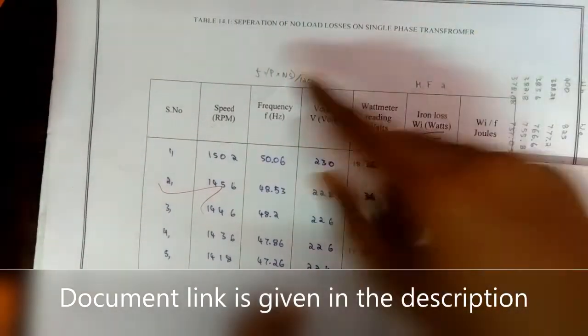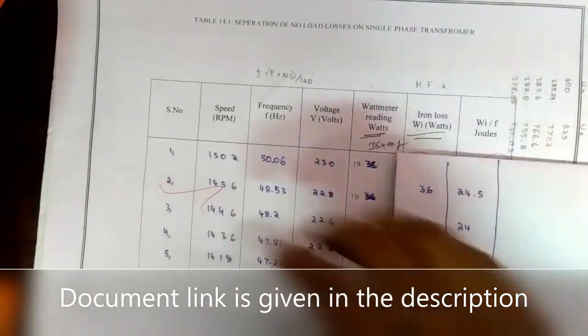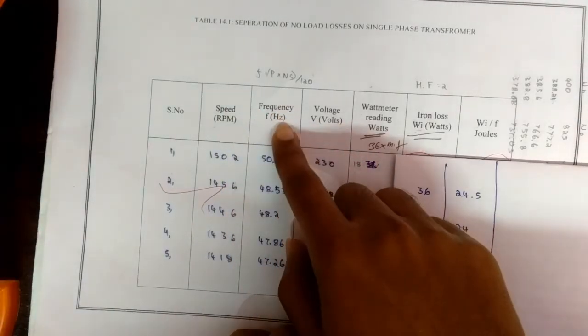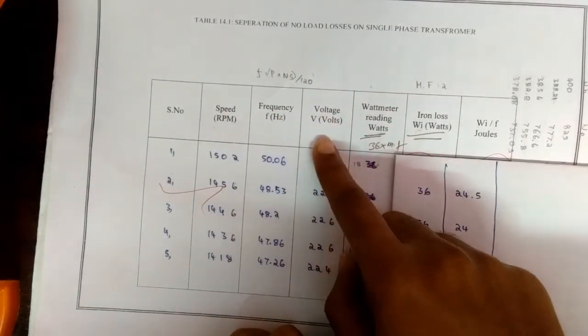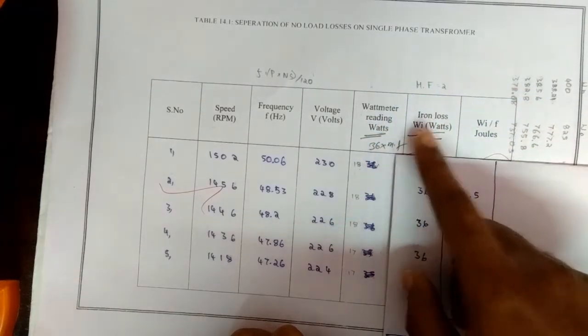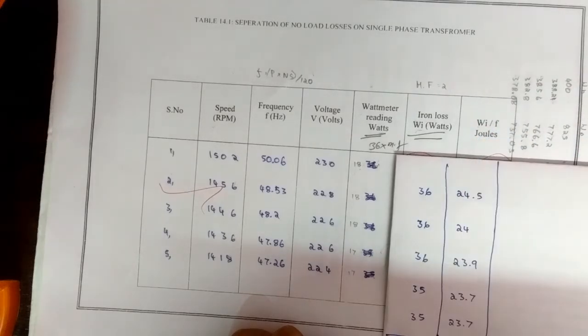The tabulation for separation of no-load losses on single phase transformer is this one. The contents will be speed in rpm, frequency in hertz, voltage in volts, wattmeter reading in watts, iron losses wi in watts, and wi by f in joules.